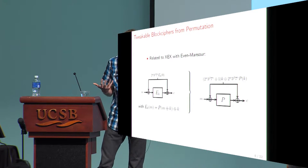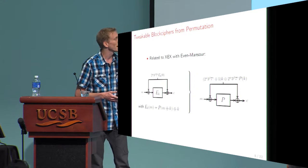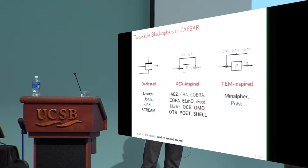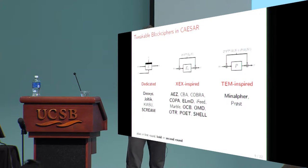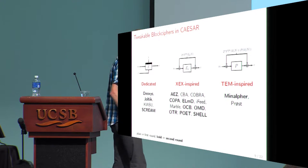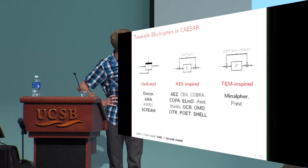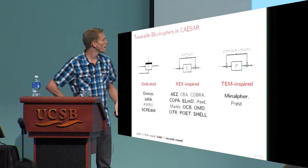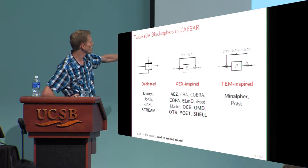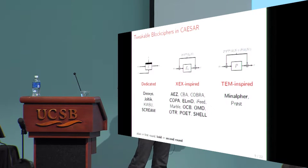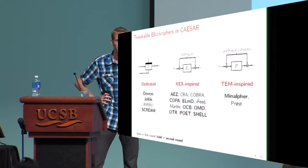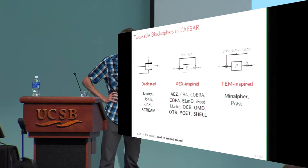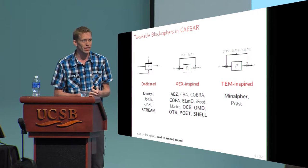In the CAESAR competition, there are quite some tweakable block cipher-based designs. We can group these directions into three approaches: dedicated tweakable block cipher design, XEX-inspired designs, and tweakable Even-Mansour-inspired designs. If you check the list of initial CAESAR submissions, there were 57 submissions, and 18 of them were based either explicitly or implicitly on tweakable block ciphers. It turns out that six of these schemes went to the third round.